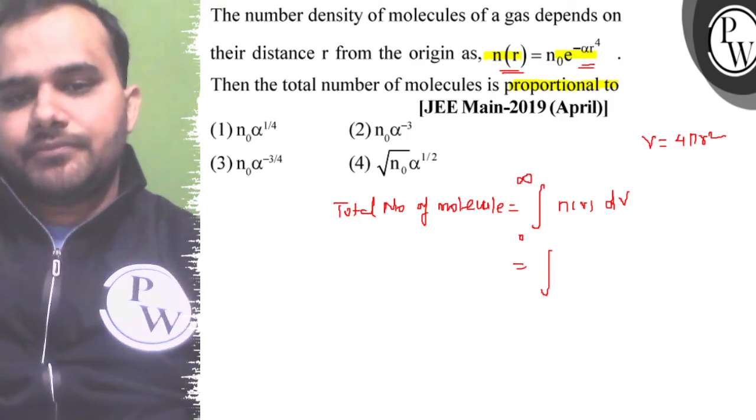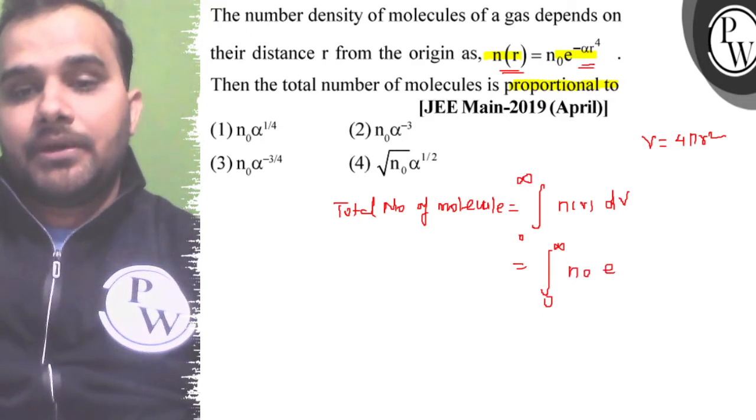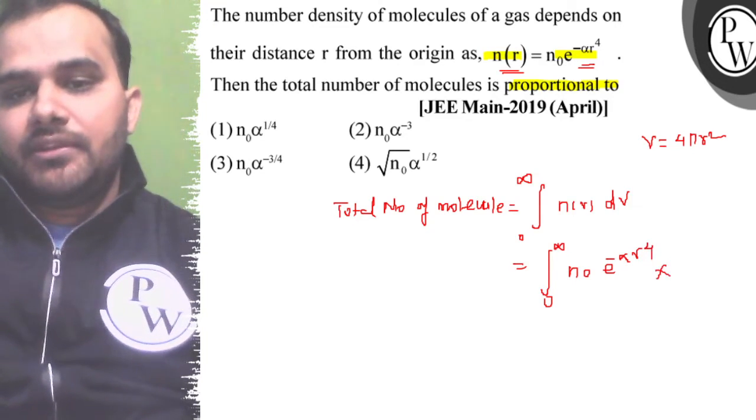Now we will put the values of n_r. This is n₀ e^(-αr⁴), and dV, if we write dV, we can write this as 4πr² dr, that element we have to consider for the spherical.